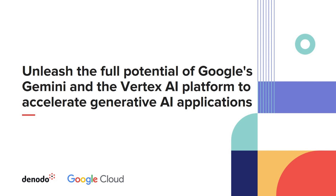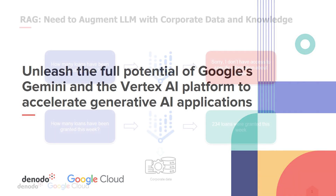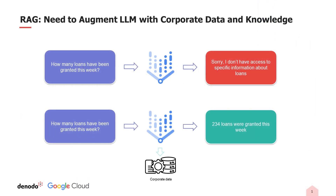This demo shows how Denodo can unleash the full potential of Google's Gemini family of advanced AI models by accelerating the development of generative AI applications on the Google Vertex AI platform. Emerging integration techniques like retrieval augmented generation, or RAG, can improve response accuracy and minimize model hallucination by anchoring AI responses using real-world data drawn from enterprise knowledge and data repositories. This integration pattern is supported with Vertex AI today, which can dynamically retrieve and incorporate relevant enterprise data as demonstrated in our example.